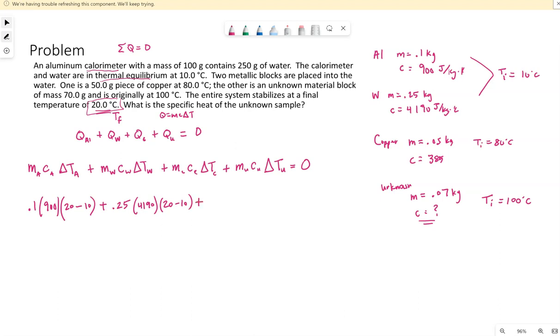Copper, mass of 0.05, C of 385, final temperature of 20, initial temperature of 80. Notice, this is going to give us a negative value, meaning the copper is losing energy, or giving energy away, which hopefully makes sense. It's going to cool off, and its energy is going into the water and aluminum.